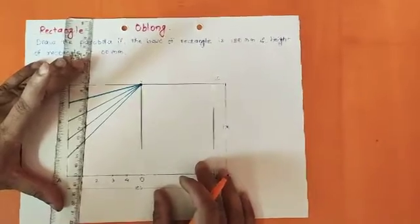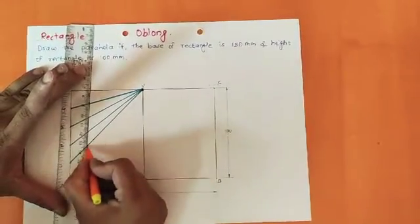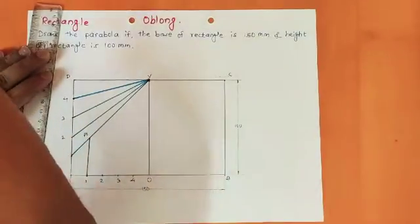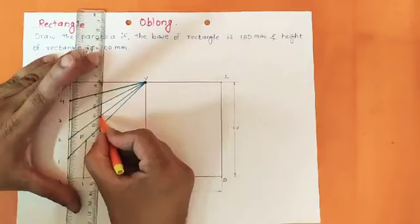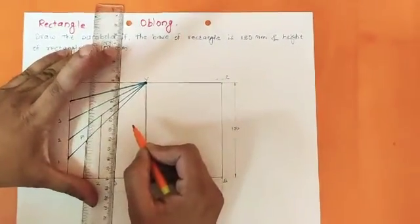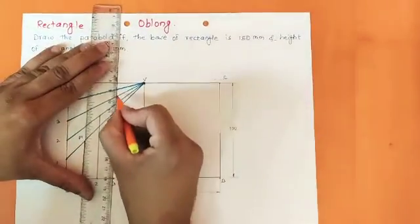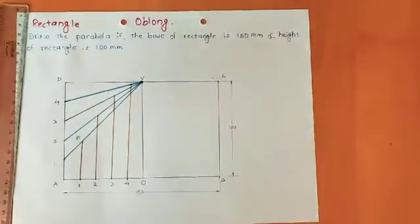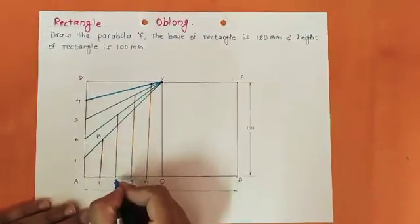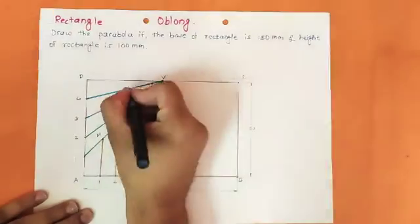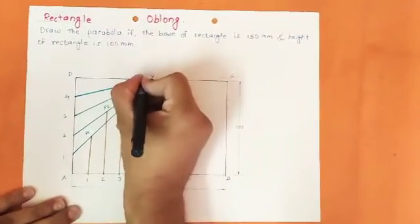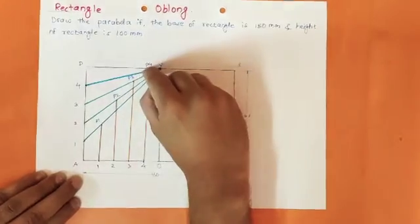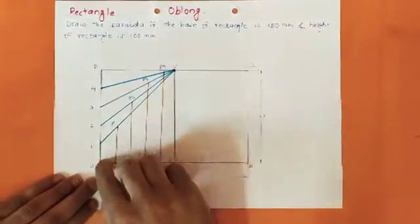Draw a vertical line through point 1 on AD, which will cut line 1V to give point P1. Similarly, a vertical line through point 2 cuts 2V to give point P2, a vertical line through point 3 cuts 3V to give point P3, and a vertical line through point 4 cuts 4V to give point P4. So you now have all the points P1, P2, P3, P4, and V in this half of the rectangle.